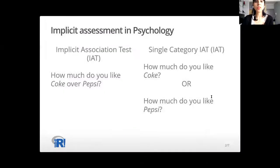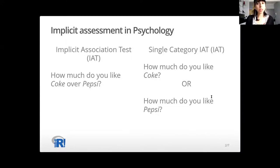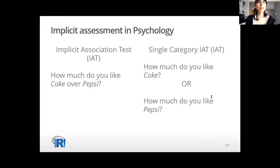So what is implicit assessment in psychology? It is the assessment of people's attitudes without directly asking them, but by inferring them from the speed with which respondents are performing categorization tasks in two contrasting conditions, say condition A and condition B.